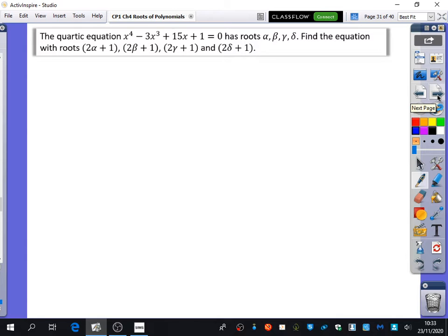This time we have this quartic equation, which is x⁴ - 3x³ + 15x + 1 = 0. It has the roots α, β, γ, δ. It wants you to take the roots, double the root, and then add 1 to the root. We would say let w = 2x + 1. We're taking the roots, we're doubling it, and we're adding 1 to it. What did we do after we said let w equals? You rearrange for x. So you will have (w - 1)/2 = x. That was our rearrange step. We're going to substitute (w - 1)/2 = x into this expression.